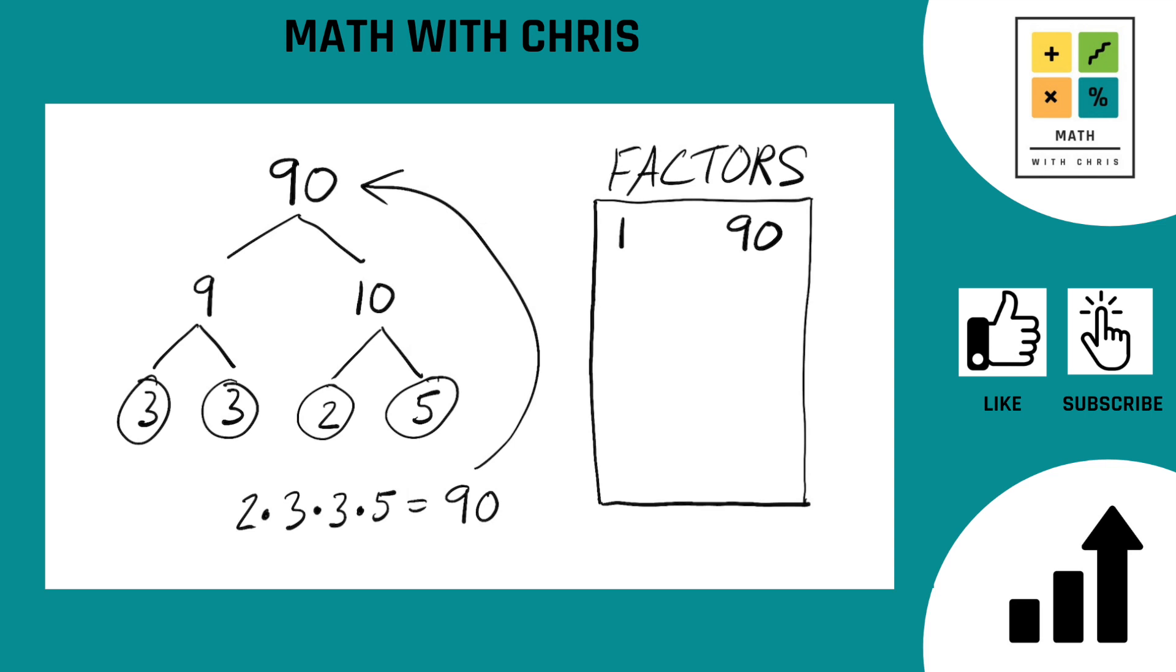Now we can bank all the prime numbers that we found. We found a 2, we found a 3, and we found a 5. And we can also bank any numbers we found along the way. We at one point hit a 9, we at one point stopped in and said hello to number 10. So we can bank both 9 and 10.